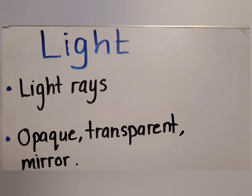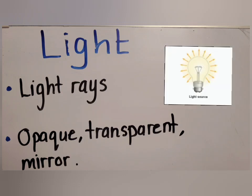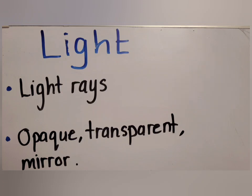Moving on to the next chapter: Light. Light sources are objects that give us light, such as the sun, fire, light bulbs, and lamps. Light reaches us through light rays, and the most important thing to know about light rays is that they travel in a straight line — never in a curved line, never in a zigzag — only one straight line, just like an arrow.